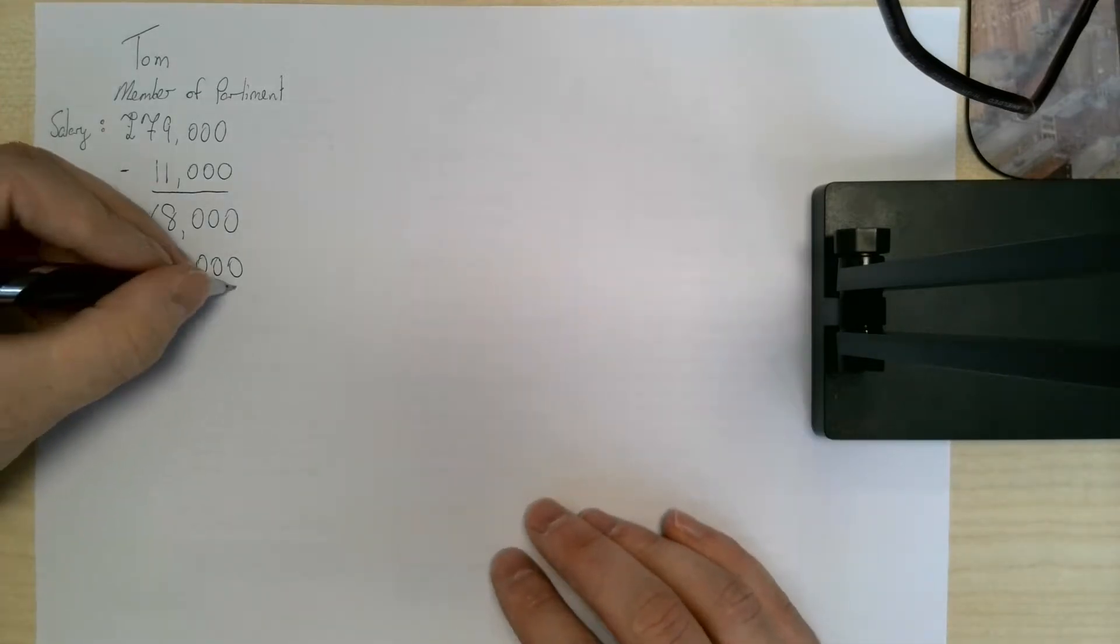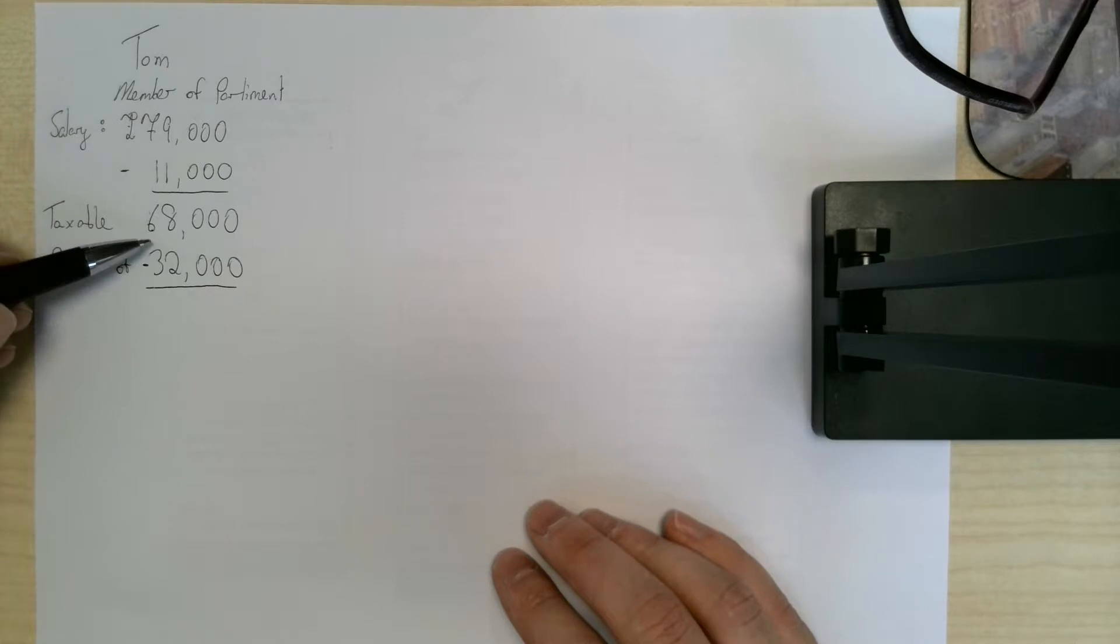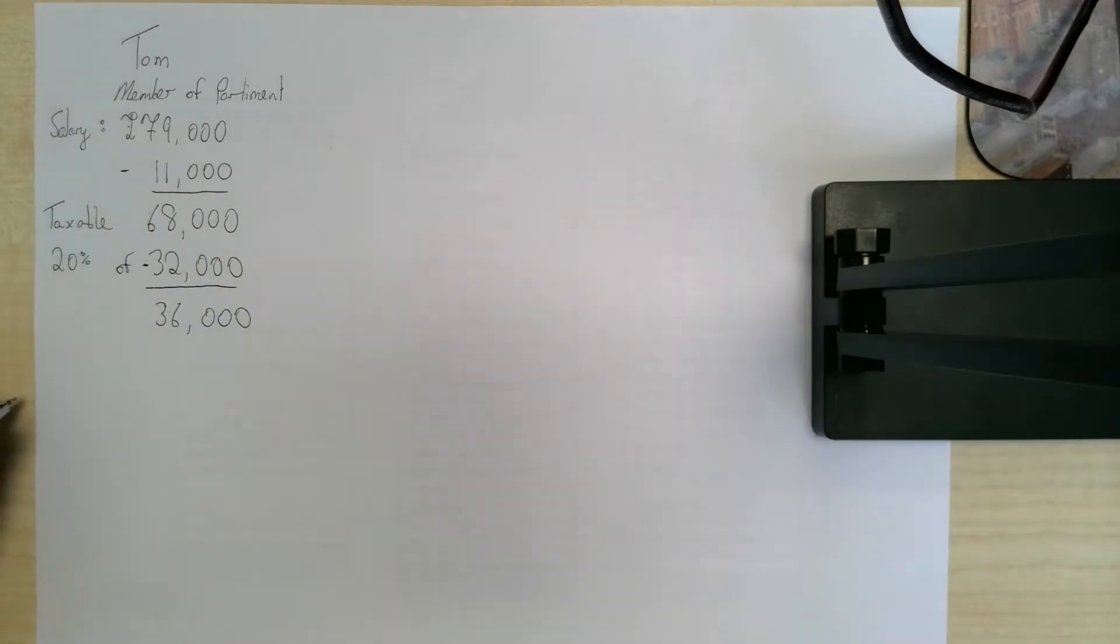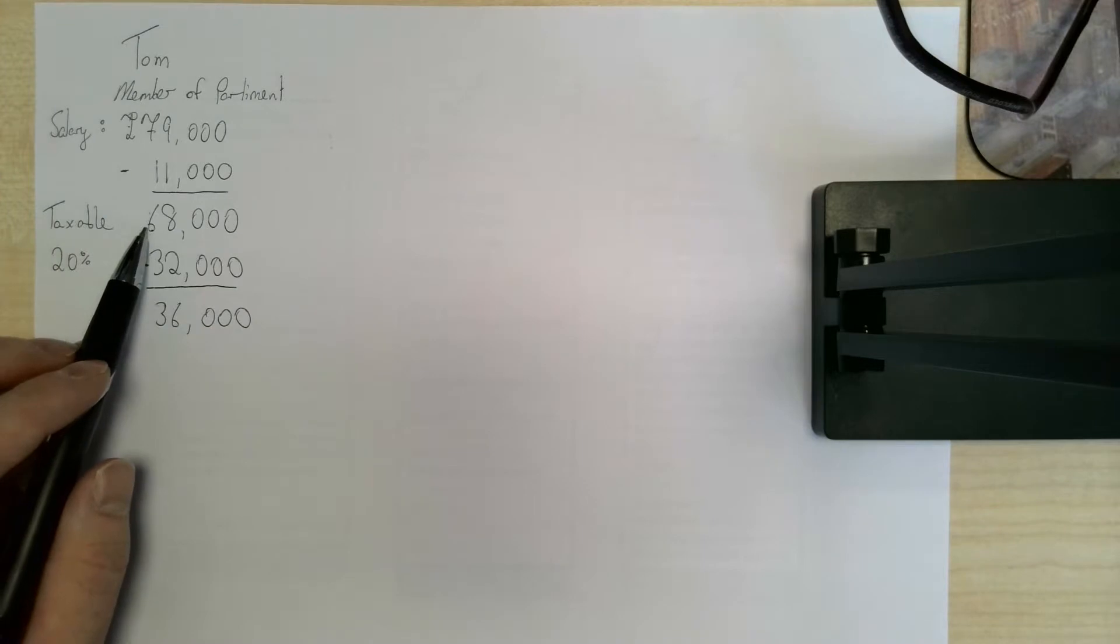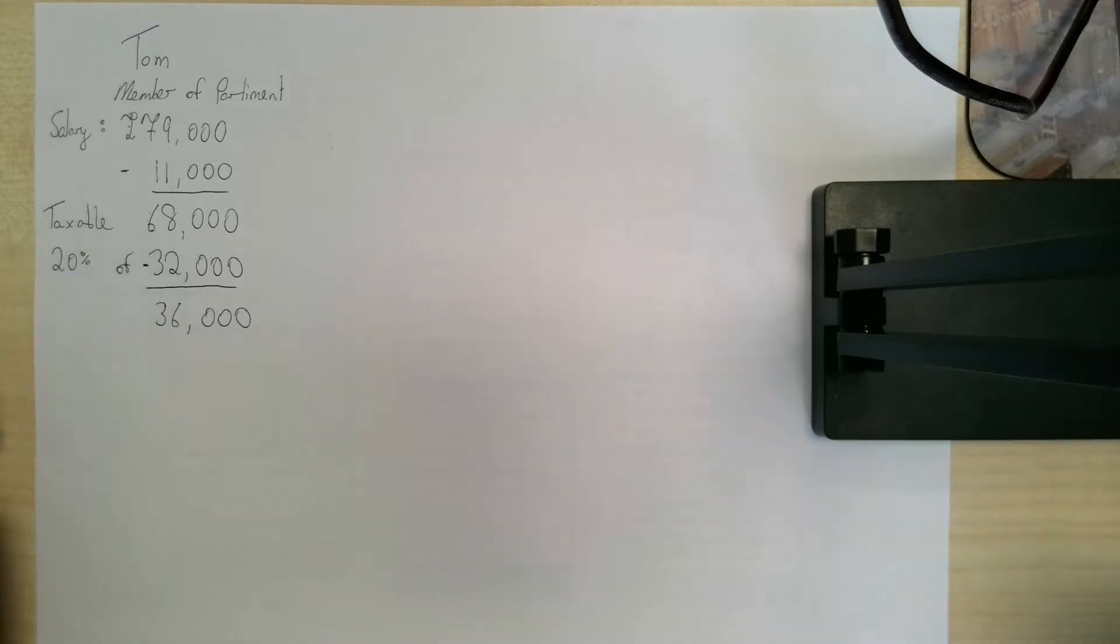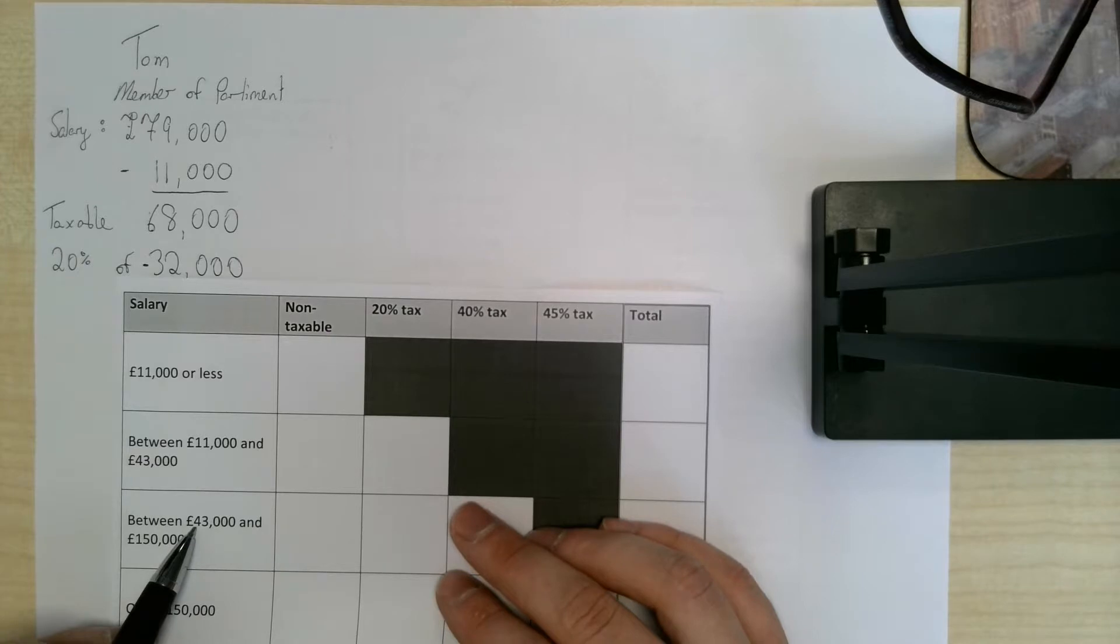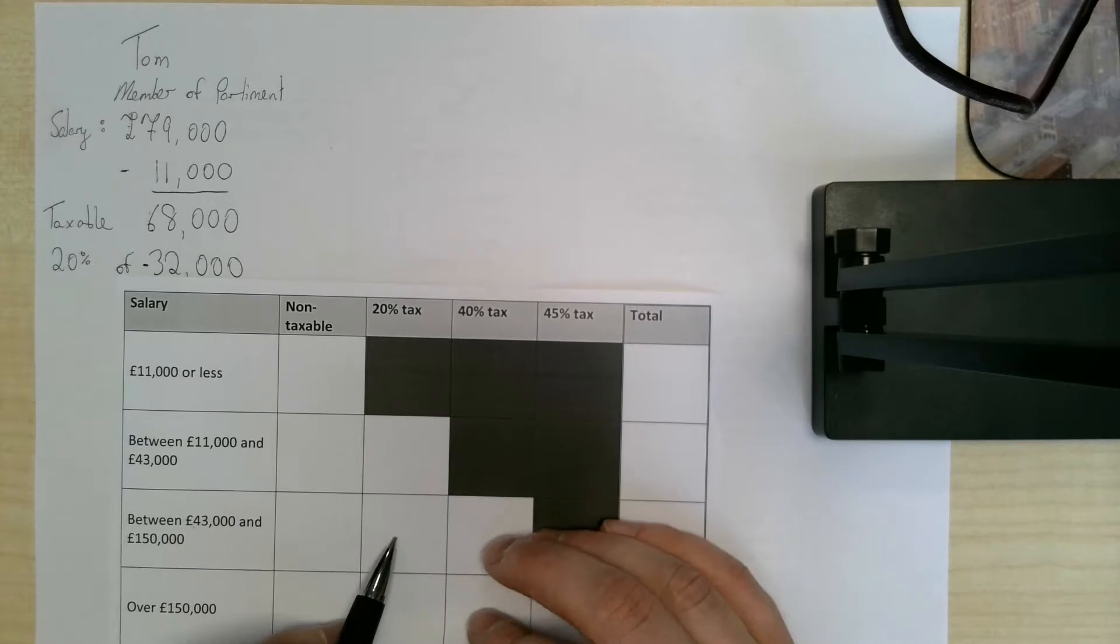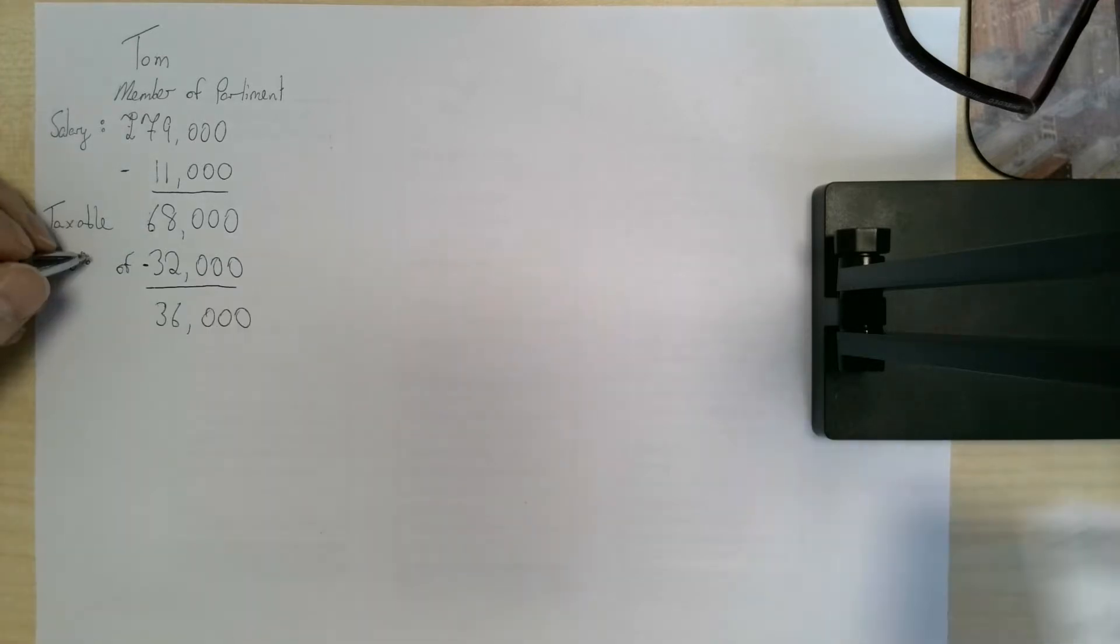We're also going to take that £32,000 away from £68,000 to see how much he's got left over. So he's got £36,000 and that £36,000 is still taxable, it's part of the £68,000. So that £36,000 falls between the £43,000 and the £150,000 simply because it's that part of his salary over £43,000. So on that he's going to pay 40% tax.